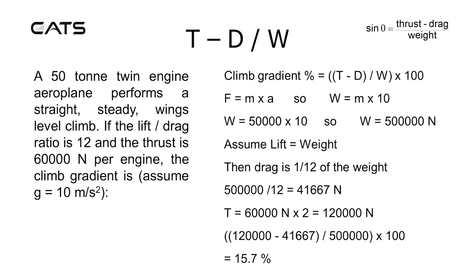Now technically this is wrong, but assume lift equals weight. So drag will be one twelfth of the weight — there was a lift-to-drag ratio of 12 to 1 after all. So 500,000 divided by 12 equals 41,667 newtons.